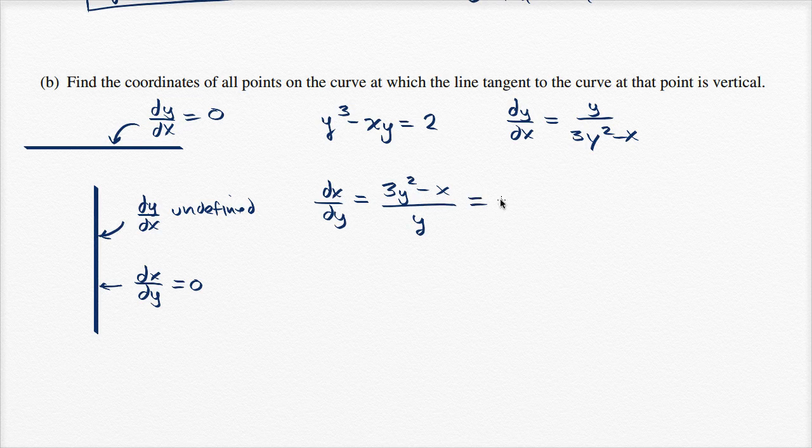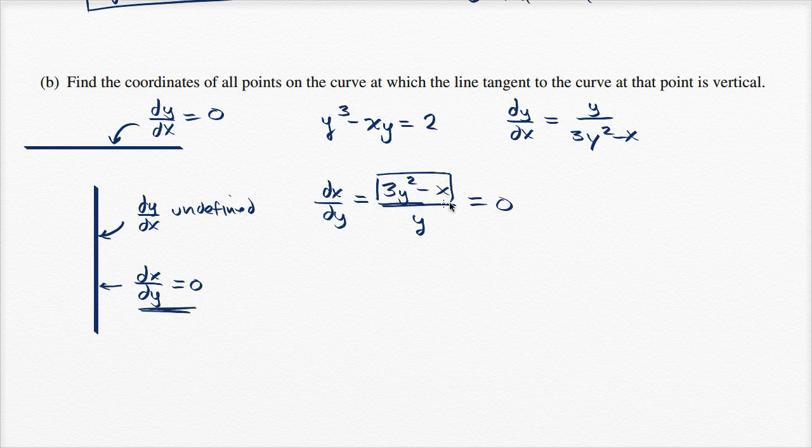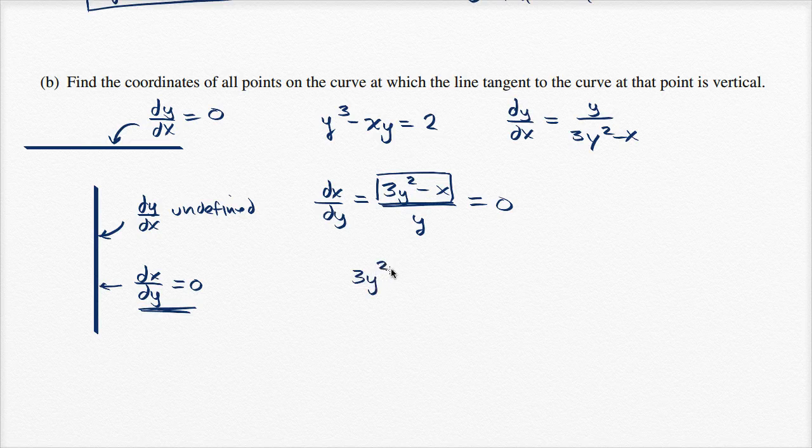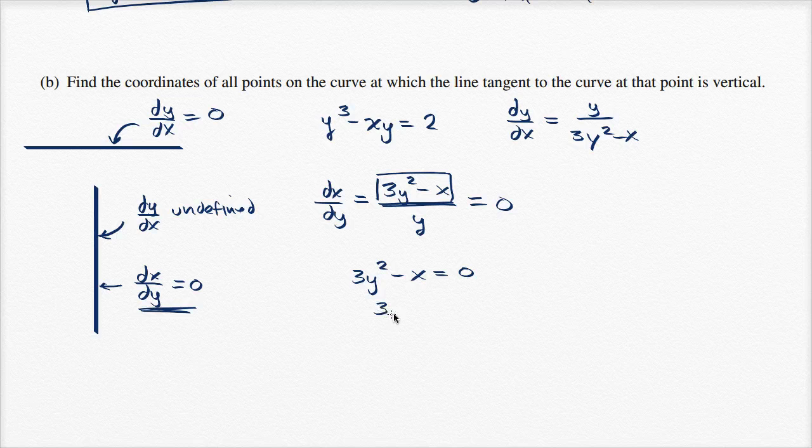And if we want this to equal zero, that's only going to happen if the numerator is equal to zero. So at what xy pair does this numerator equal zero? 3y² - x = 0. You can add x to both sides and get 3y² = x.